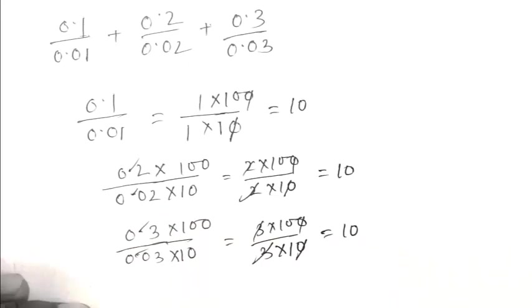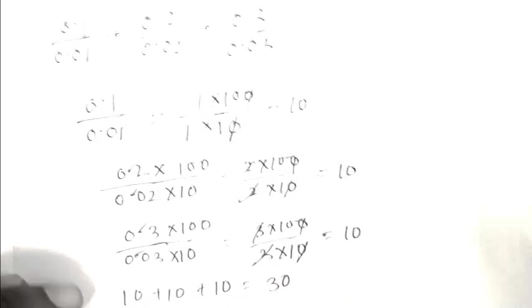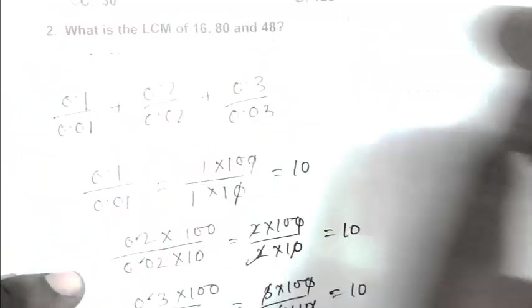So friend, 10 plus 10 plus 10, that is 30. So friend, answer is 30. C is the right answer.